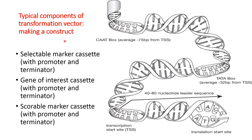Typical components of a transformation vector construct include a selectable marker cassette with promoter and terminator, a gene of interest cassette with promoter and terminator, and a scorable marker cassette with promoter and terminator.